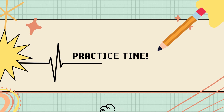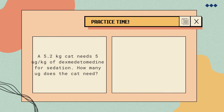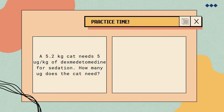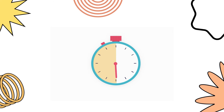In the last problem, I will let you give it a try. The problem is: a 5.2-kilogram cat needs 5 micrograms per kilogram of dexmedetomidine for sedation. How many micrograms does the cat need? Time's up!